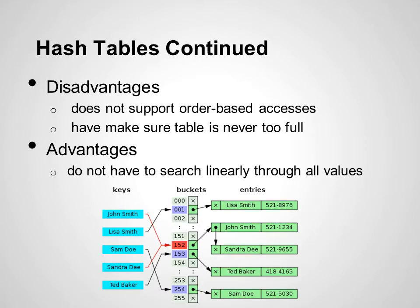While hash tables are generally extremely efficient as constant time operations, they do have their disadvantages. Hash tables do not support order-based accesses. This means that if you wanted to, for example, find all rows in an accounting table for payments made within a particular range of dates, you would not be able to. A hash table must also not be too full, so as to avoid collisions. Their distinct advantage is their ability to perform constant time operations because they do not have to linearly search through all values. The image displayed in this slide is of a simple hash table — entry numbers are generated from a set of keys, and these entry numbers point to the entries themselves. A collision can be seen, which will decrease the efficiency of a hash table lookup.